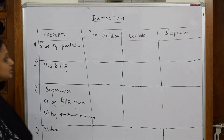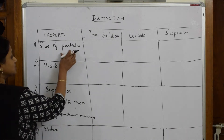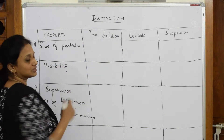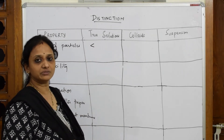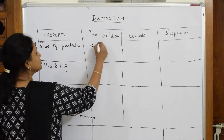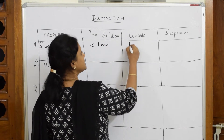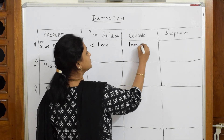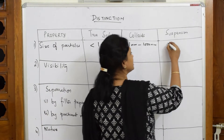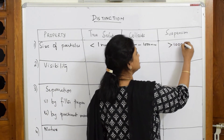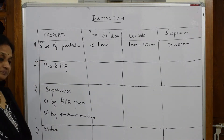Let's start differentiating true solutions, colloids, and suspensions based on size. For a true solution, the size is less than 1 nanometer. For colloids, the size varies from 1 nanometer to 1000 nanometers. For suspensions, the size is greater than 1000 nanometers.